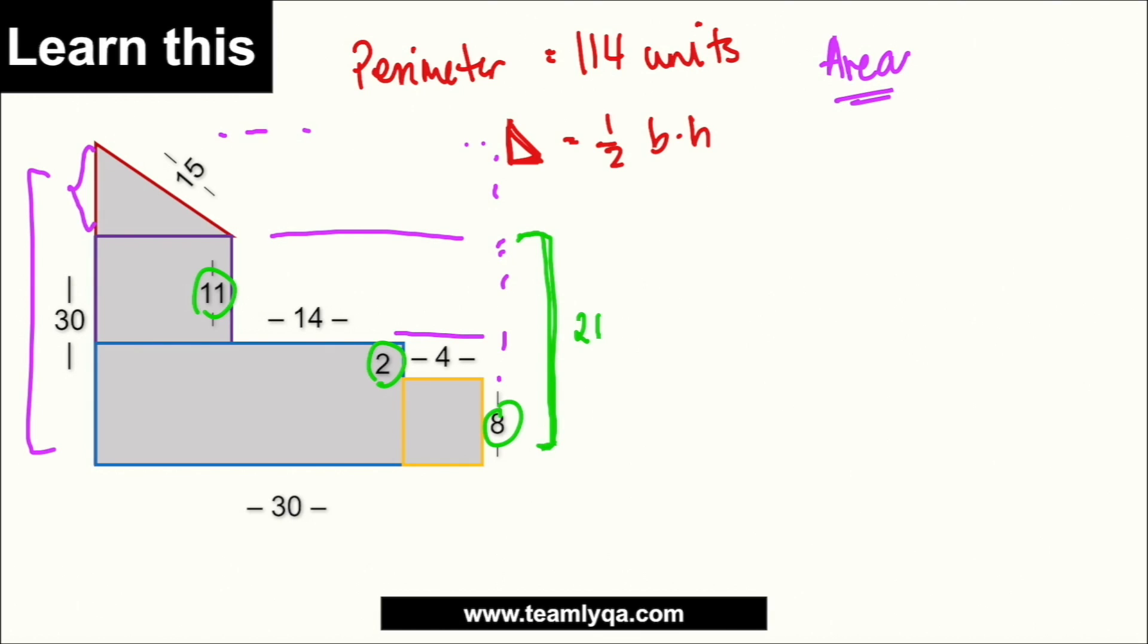So, kung 21 itong height na ito, at pantay siya dito, di ba? Ibig sabihin, itong part na ito, ang gagawin ko lang would be 30 minus 21, which would give me 9. 9 ngayon, yan. Again, saan ko yung kinuha? 30, tsaka 21. So, para mabuo ko yan, maipantay ko siya, 9 ang idadagdag ko ngayon. So, ngayon, meron na akong height, which is 9.